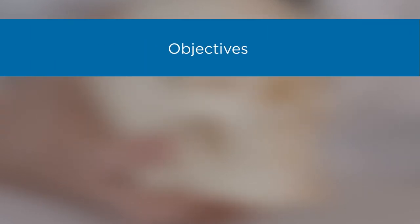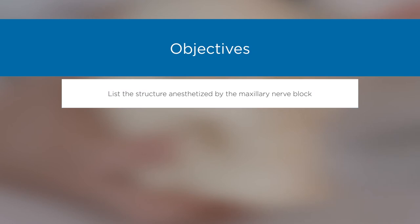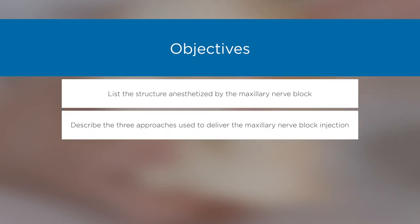Objectives: List the structures anesthetized by the maxillary nerve block. Describe the three approaches used to deliver the maxillary nerve block injection.